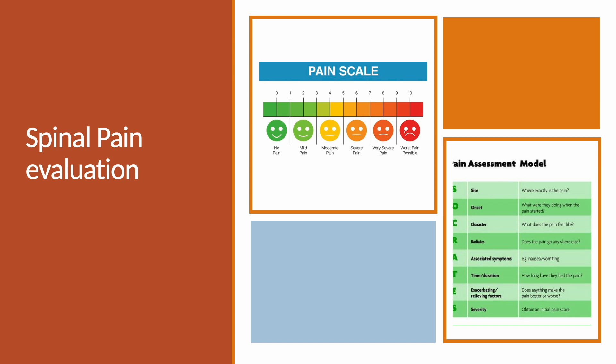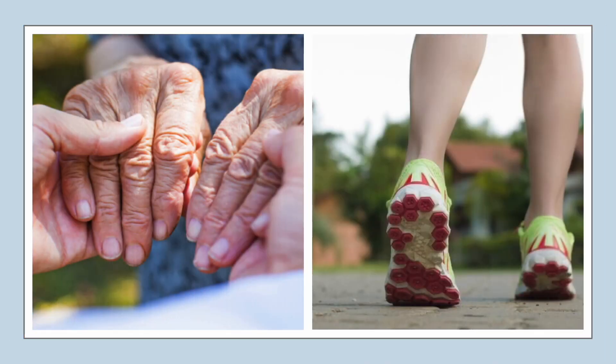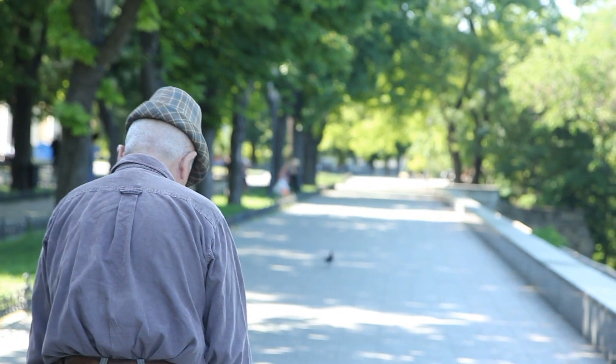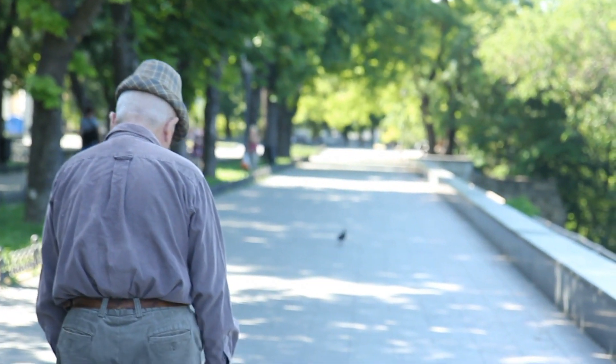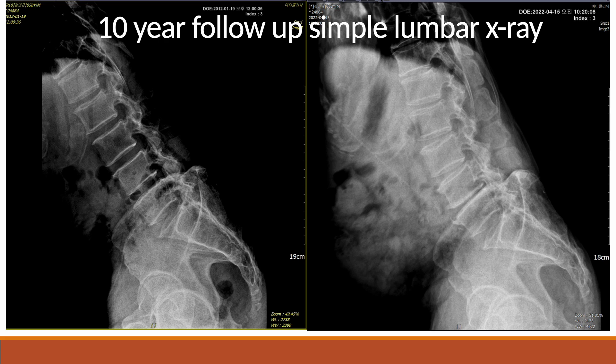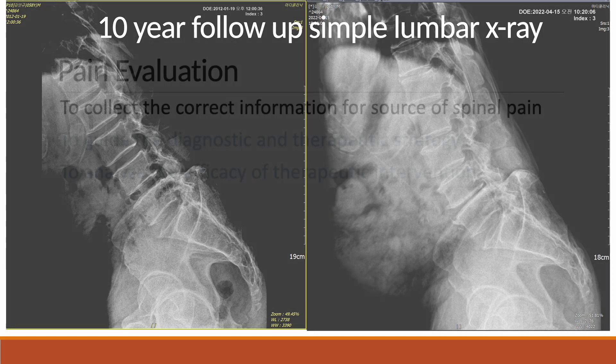There are many ways to substitute direct physical examination. Analyzing dynamic factors and careful observation of walking and posture will help estimate physical conditions. Don't forget the power of a simple X-ray — it contributes a lot to evaluating spinal status. In addition, 10-year follow-up X-rays give insight into the degenerative process.